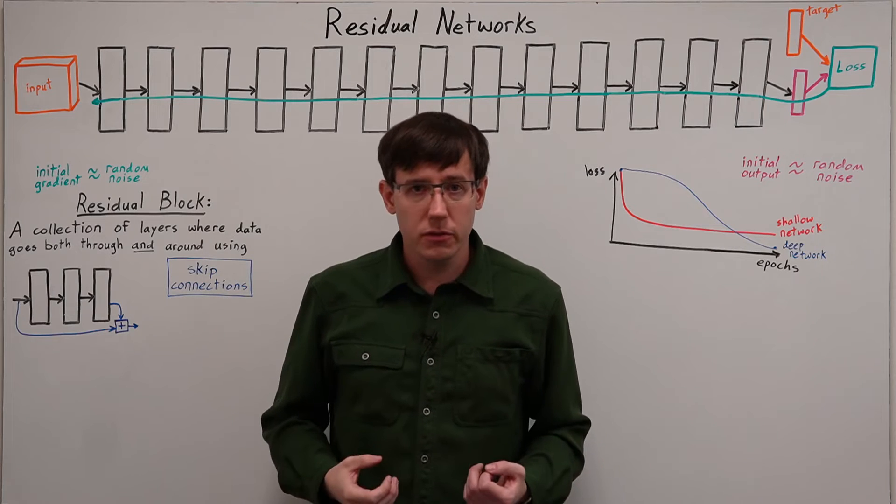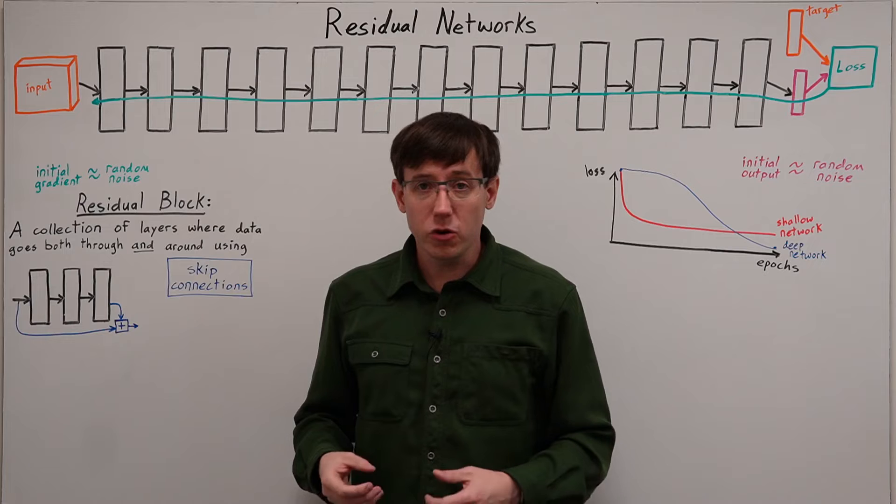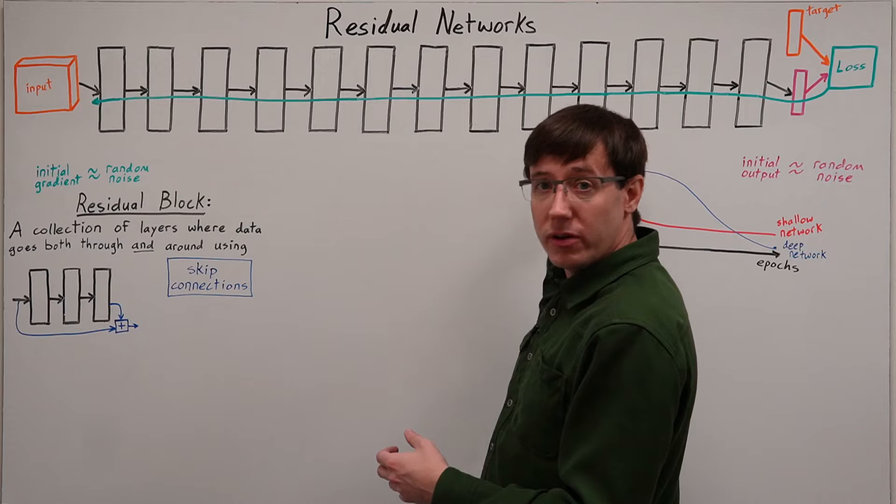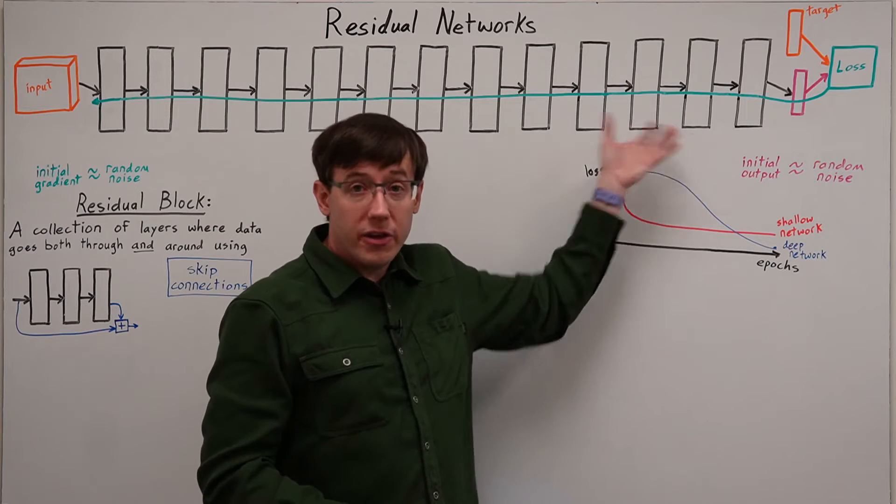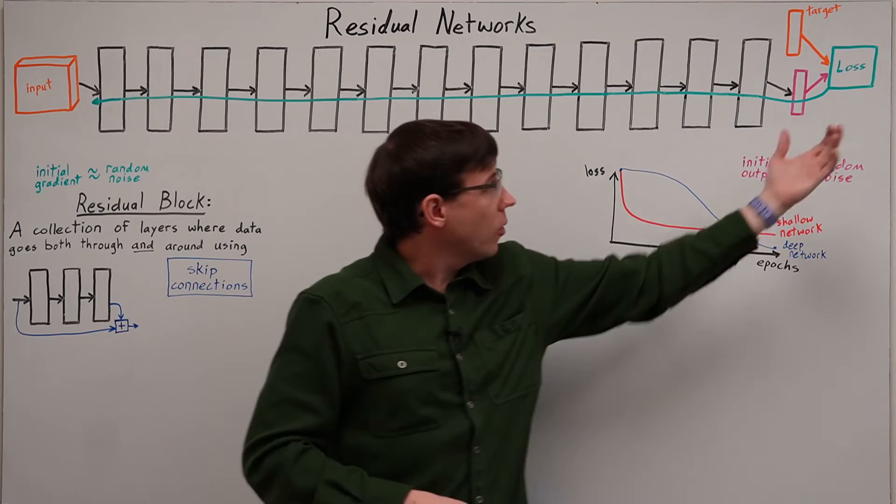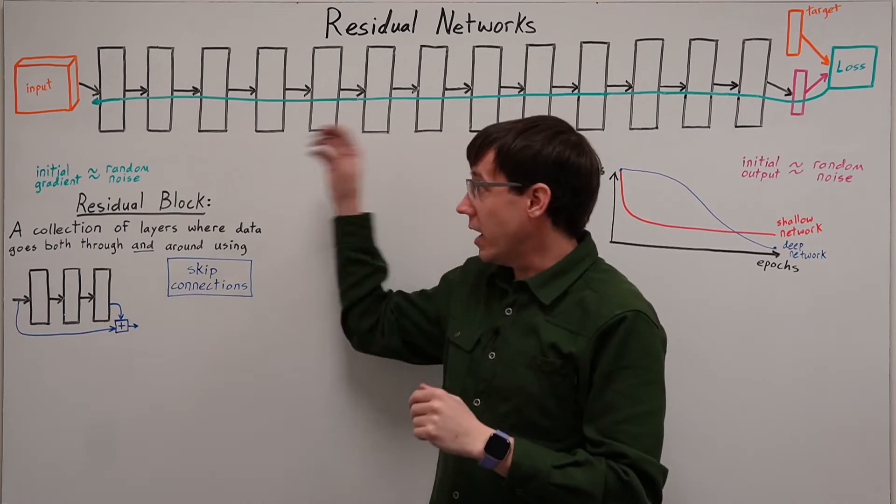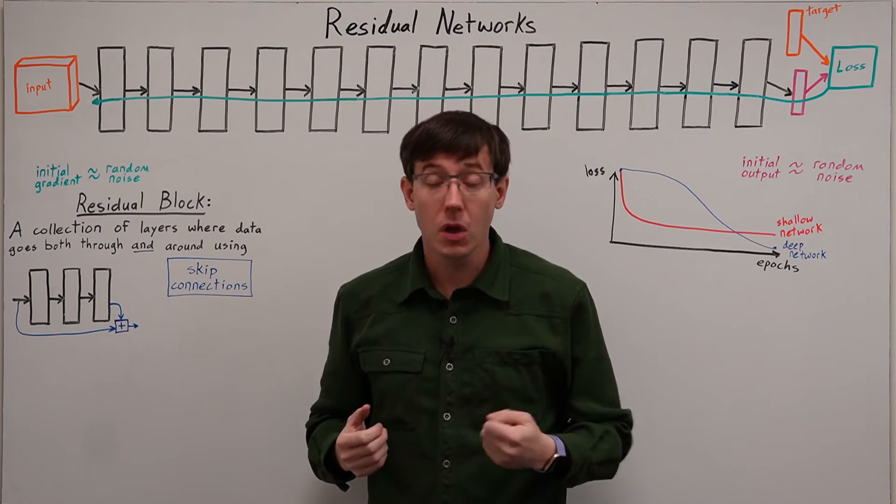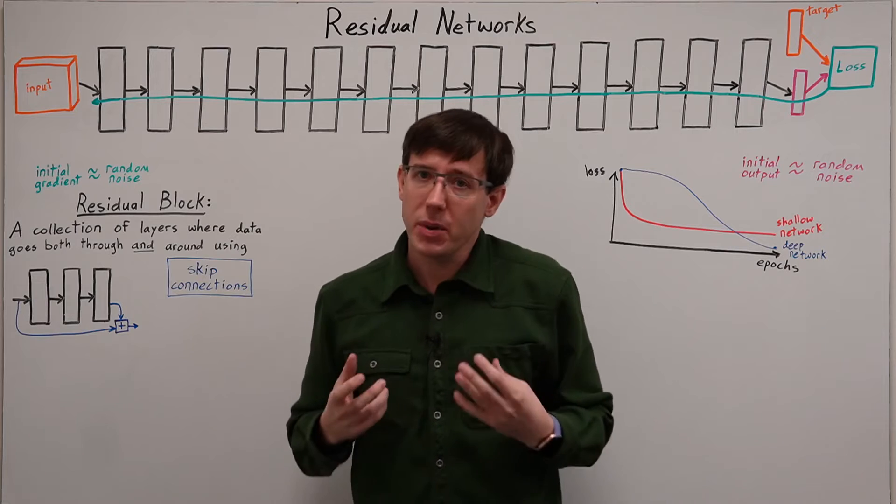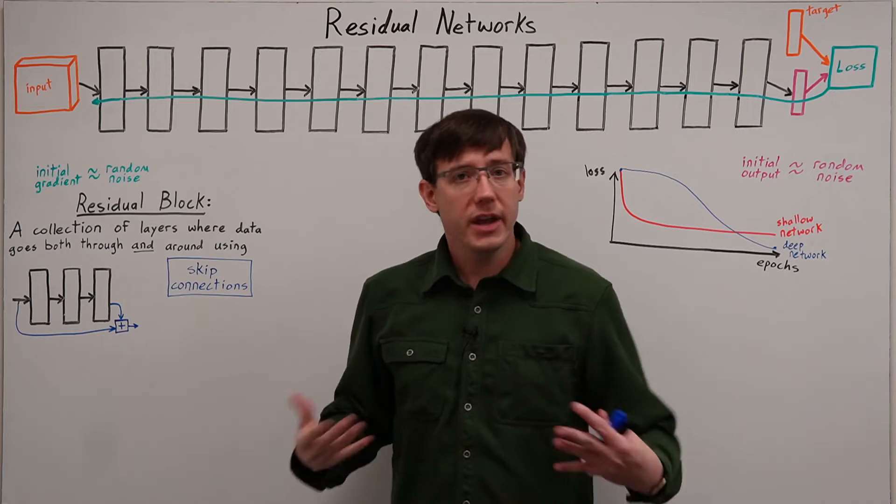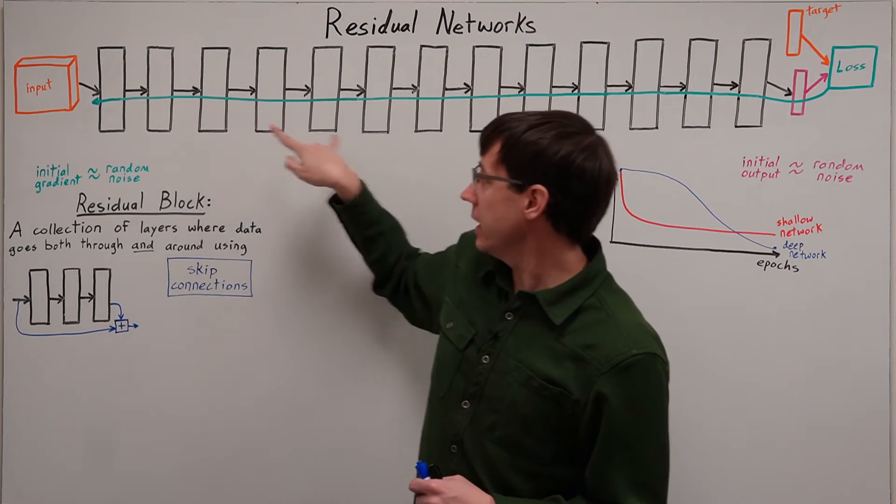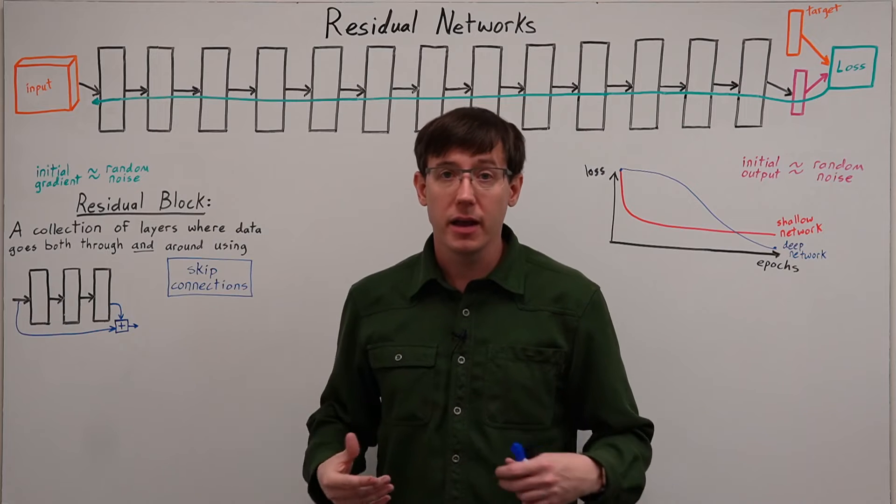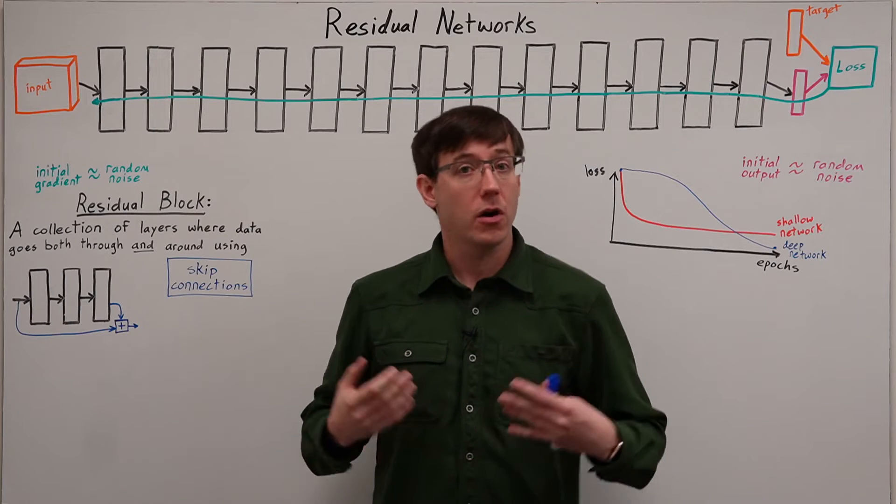So what can we do about this? Well, we'd like to create some way for the data to arrive at the later layers of the network and make their inputs more meaningful, and also for loss gradients to arrive at the early layers of the network and make their updates more meaningful. And we can achieve both of those goals using skip connections. The idea of skip connections is to group up layers of the network into blocks. And for each block, have data go both through and around.